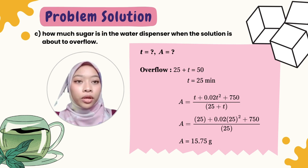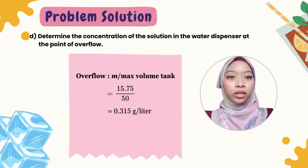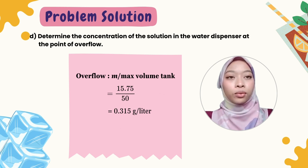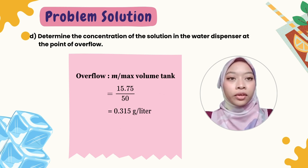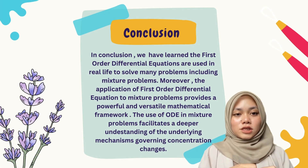Substituting t equals 25 gives A equals 15.75 grams. For part D, the concentration at the point of overflow equals the amount of sugar divided by the maximum tank volume: 15.75 divided by 50, which equals 0.315 grams per liter.